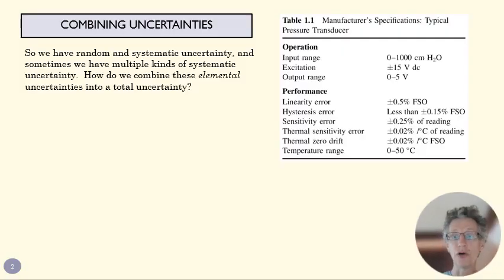So all of those uncertainties that we've talked about, whether big picture random or systematic, or smaller picture like linearity and hysteresis error and so forth that you can see listed on these manufacturer specifications, are called elemental errors. They're single errors that we calculate one at a time. Now what we're going to do is combine those elemental errors into a total uncertainty.